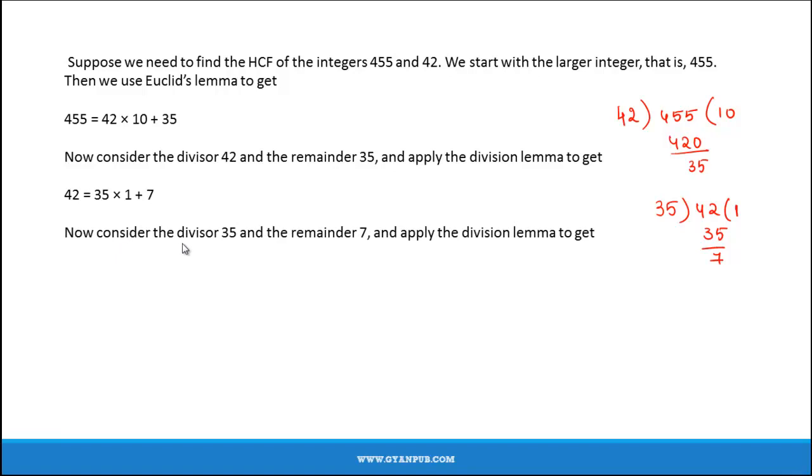Now consider the new divisor 35 and the remainder 7, and apply the division lemma. So 7 times 5 is 35, and the remainder is 0. So 35 can be written as 7 times 5 plus 0.